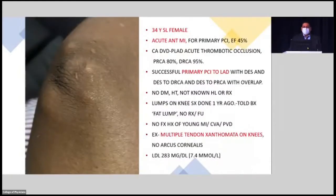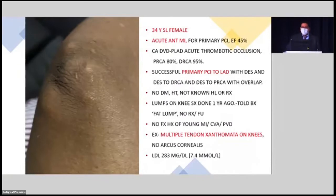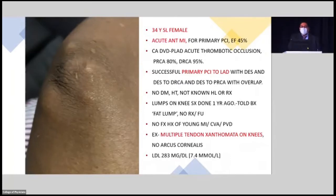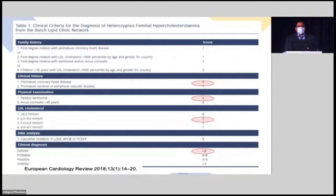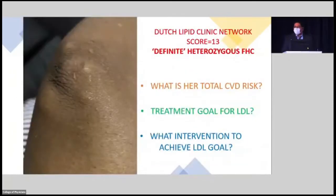A 34-year-old Sri Lankan female presented with an acute anterior MI. She was admitted for primary PCI — the LAD was 100% acutely thrombotically occluded; she had severe two-vessel disease and received three stents. The following day in the ICU, tendon xanthomata were noted on her knees — some had previously been surgically removed, with visible scars. Using the Dutch Lipid Clinic Network criteria — very high scores for tendon xanthomata, premature coronary artery disease, and an LDL of 283 mg/dL — she scores approximately 13 points: a definite heterozygous familial hypercholesterolaemia.